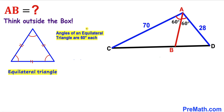Let's recall this crucial fact: the angles of an equilateral triangle are 60 degrees each. So therefore this angle is 60 degrees, this angle is 60 degrees, and likewise this interior angle is 60 degrees as well.